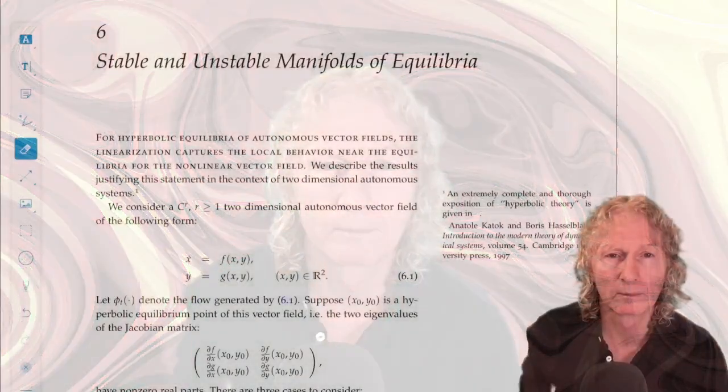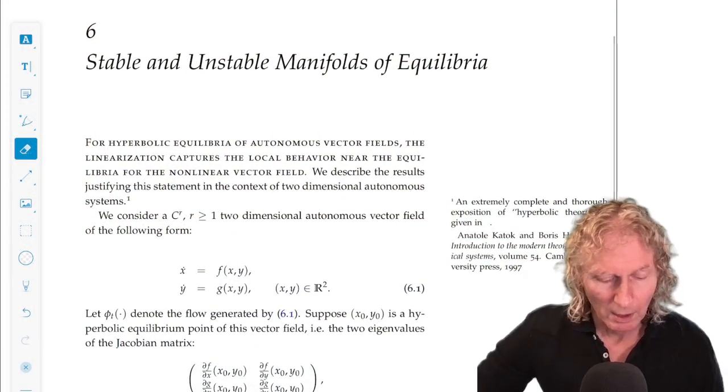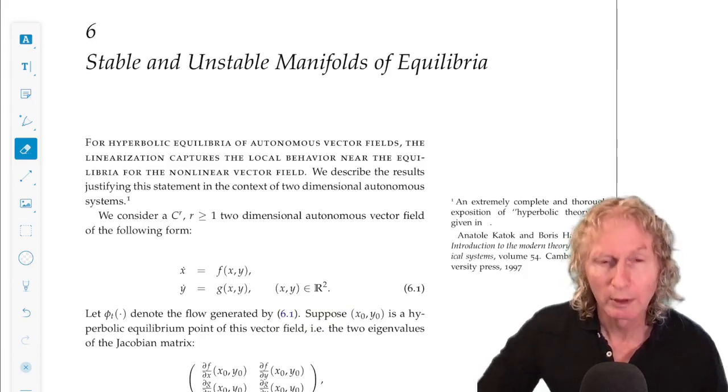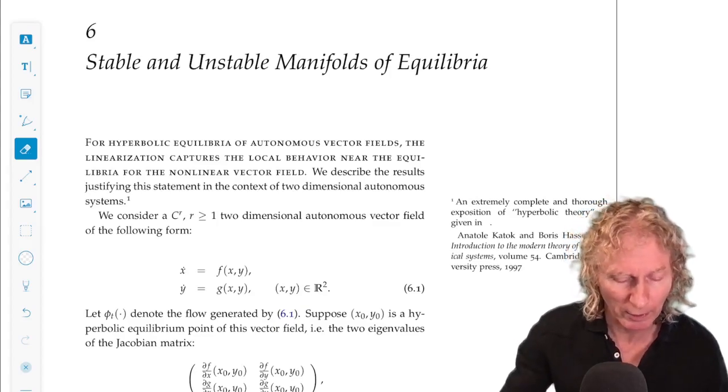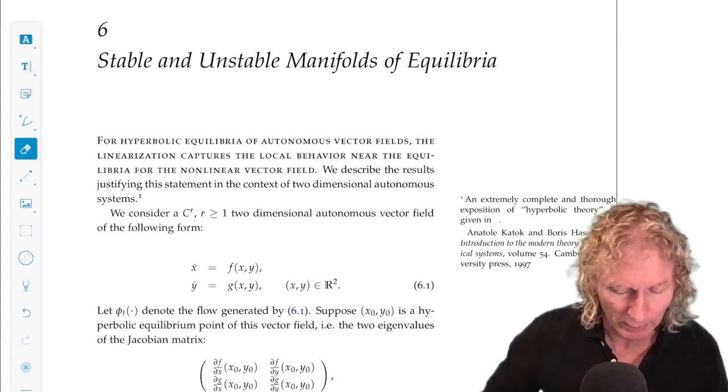We're going to start Chapter 6 now, and the main idea in this chapter is to learn about the implications of hyperbolicity for equilibrium points for the full nonlinear vector fields. The title is Stable and Unstable Manifolds of Equilibria. We're going to do a little bit more than that, but actually it is, as we learned at the very end, a complete description of what we're going to do in this chapter.